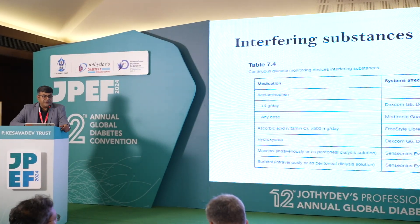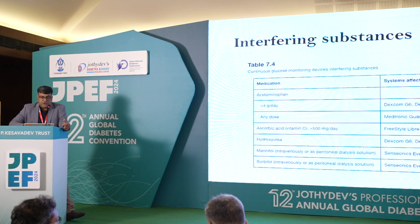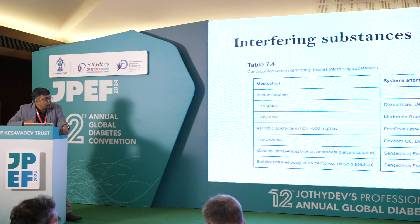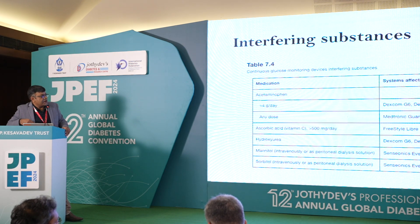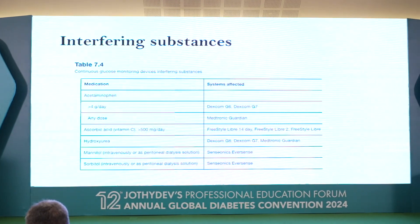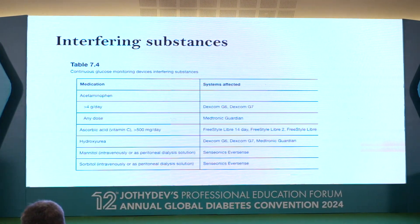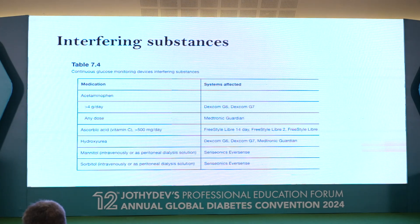Regarding substances that can interfere with CGM readings: acetaminophen at higher doses can interfere with Dexcom G6 and G7, and at any dose can interfere with Medtronic Guardian devices. Vitamin C at levels more than 500 mg per day can interfere with Libre devices, though as heard from a colleague, up to 1 gram per day may be acceptable — more than 1 gram might interfere. Hydroxyurea can interfere with all these devices. Intravenous use of mannitol or sorbitol can have some interference with Eversense devices, which are implantable CGM devices.